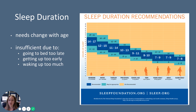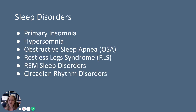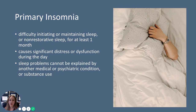If your sleep efficiency is off or your sleep duration is off, you can have insomnia. Let's talk about some of the different kinds of sleep disorders — this is not a complete list, but these are some of the most important to know about. We're going to talk about primary insomnia, hypersomnia (sleeping too much), obstructive sleep apnea, restless leg syndrome, REM or rapid eye movement sleep disorders, and circadian rhythm disorders.